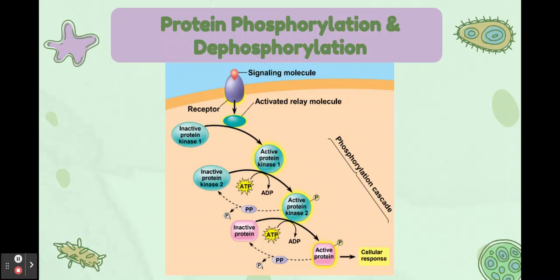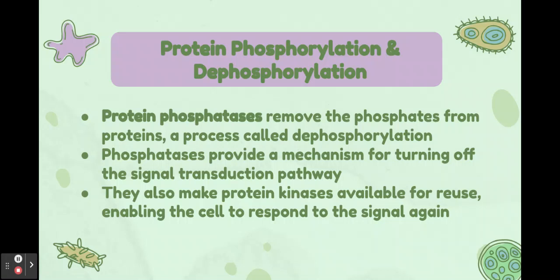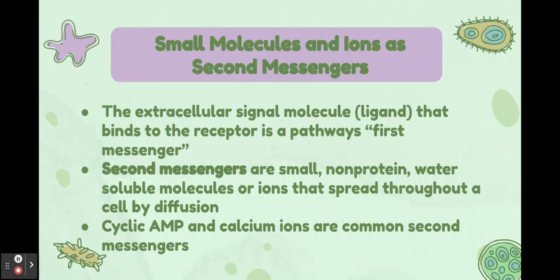In the phosphorylation cascade: a relay molecule activates protein kinase 1; active protein kinase 1 activates protein kinase 2; active protein kinase 2 phosphorylates a protein that brings about the cell's response to the signal. Then protein phosphatases catalyze removal of phosphate groups, making the proteins inactive again. This provides a mechanism for turning off the signal transduction pathway and makes protein kinases available for reuse, enabling the cell to respond to the signal again.